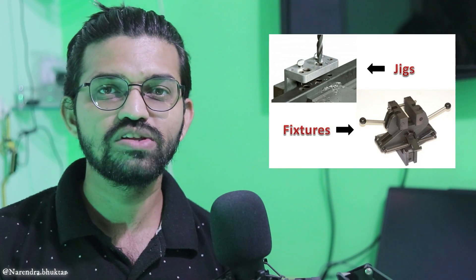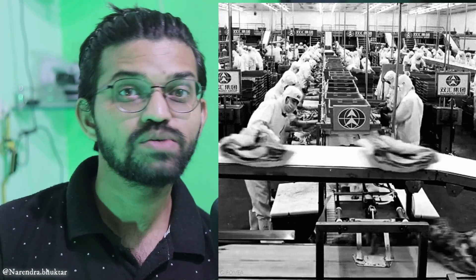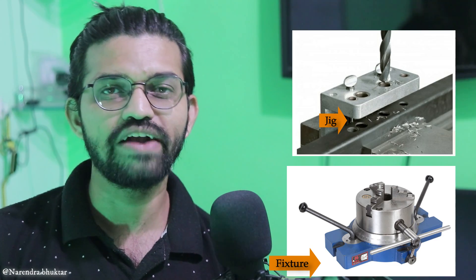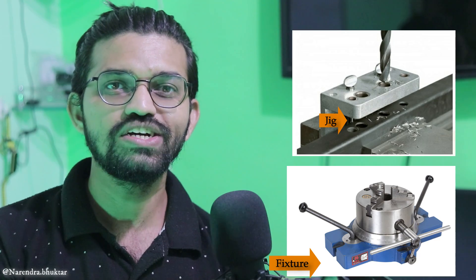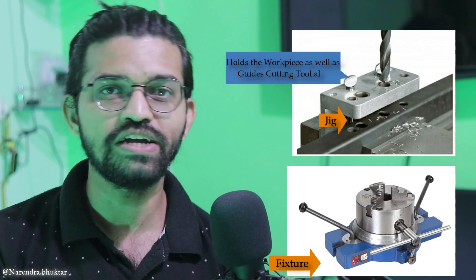These jigs and fixtures are nothing but specialized kinds of devices that are used to increase the production rate in any manufacturing process. The main difference between jigs and fixtures is that a jig holds the workpiece as well as guides the cutting tool also.